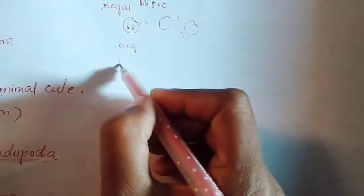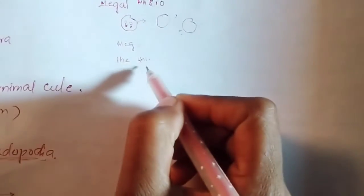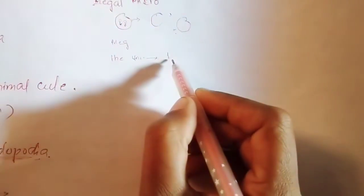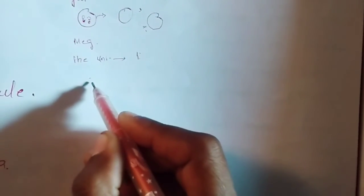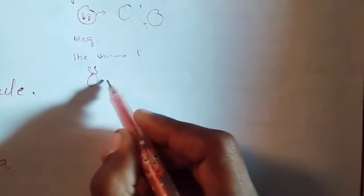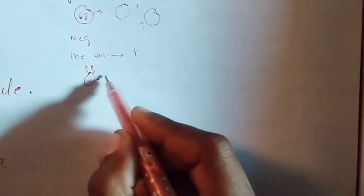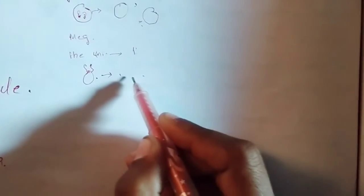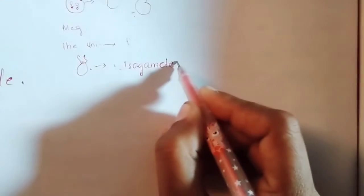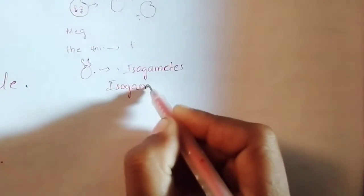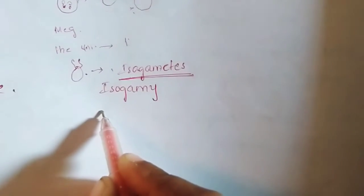In the megalospheric form, which undergoes sexual reproduction, the uninucleate larger nucleus breaks and forms several small nuclei. The cytoplasm collects around each nucleus, then the nuclei divide twice, and each cell acquires a pair of flagella. Because each cell has two flagella, it is called biflagellate. The fusion of biflagellate cells of similar size is called isogamy, and the cells responsible for isogamy are called isogametes.